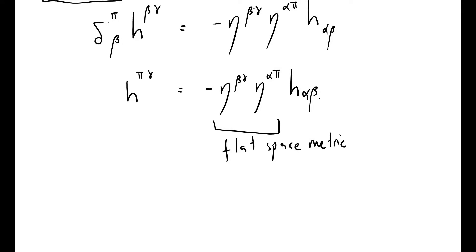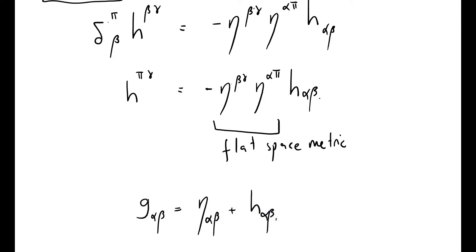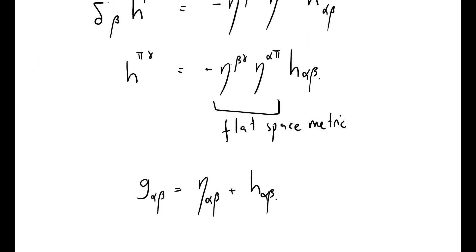General relativity, step by step. We've been looking at the metric tensor being composed of two quantities: the flat space metric and something small, which we're hoping helps us understand gravitational waves. We made the observation that one can raise and lower the indices of h using the flat space metric rather than the full metric, simply because we're considering only linear terms and ignoring terms of order h squared.